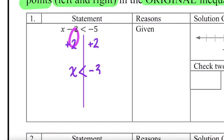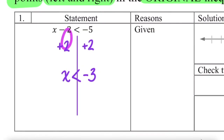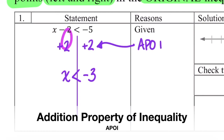Notice the only difference here is that we're not dealing with equations — we're dealing with a less than symbol. In equations, this step would be called the addition property of equality, or APE. But since we're dealing with inequality, it's actually called the addition property of inequality, or as we like to call it, APOI. And then we simplified and we have x is less than negative 3.